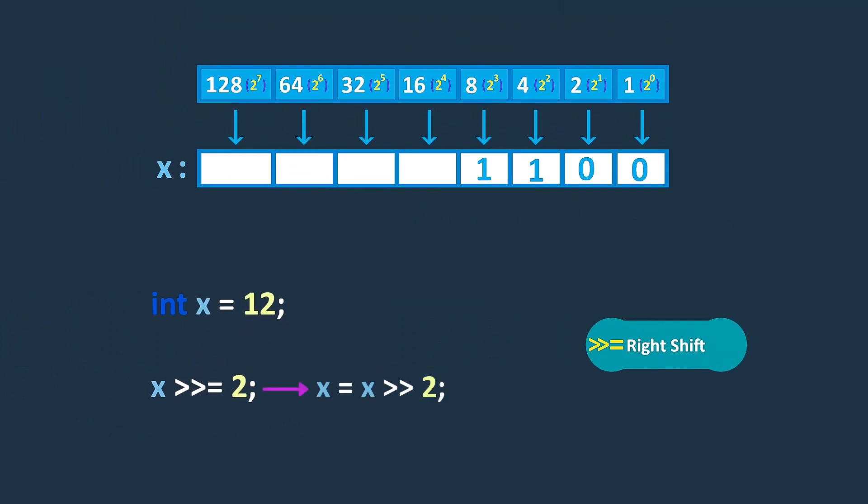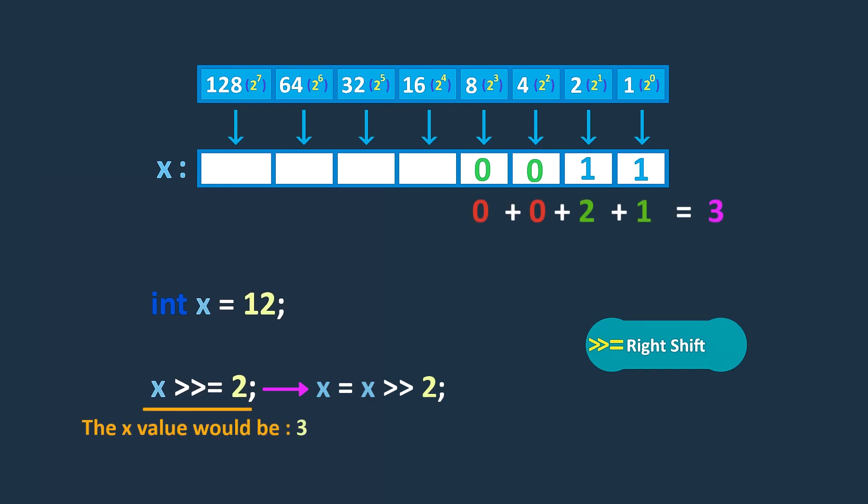On the other hand, the right-shift assignment operator shifts the bits of the variable to the right. In this example, the value of x would be 3.